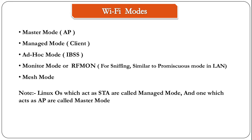Now let's look at some of the wireless modes. There are many: master mode, where the access point operates; managed mode, which is your client; ad hoc mode, which is IBSS; and monitor mode, also called RF mode, used for sniffing — in this mode you can see all packets in the air, similar to promiscuous mode in LAN. There are other modes like mesh, repeater, and wireless distribution system.